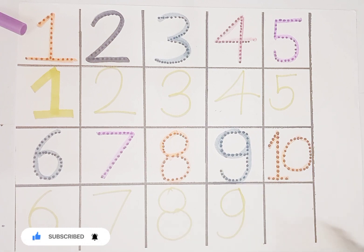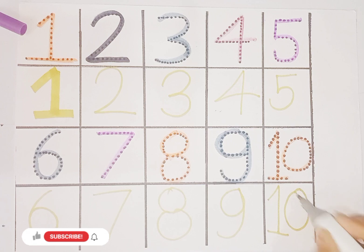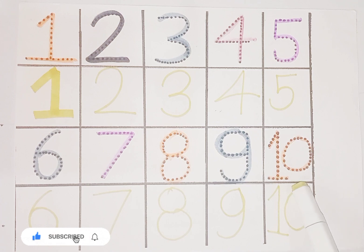And last one is number 10. This is number 10 and 10 is here. So kids today we learn 1 to 10 counting. Let's revise again.